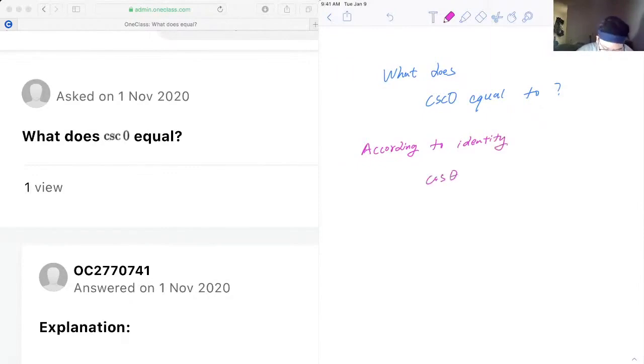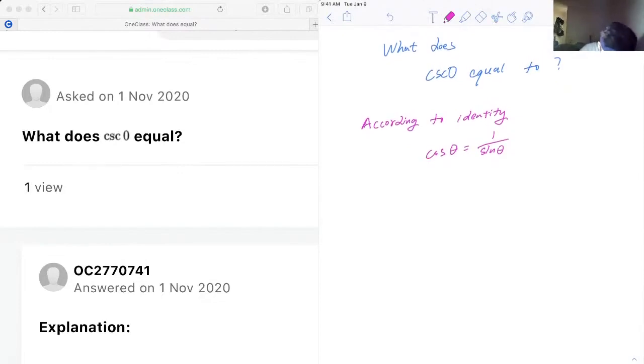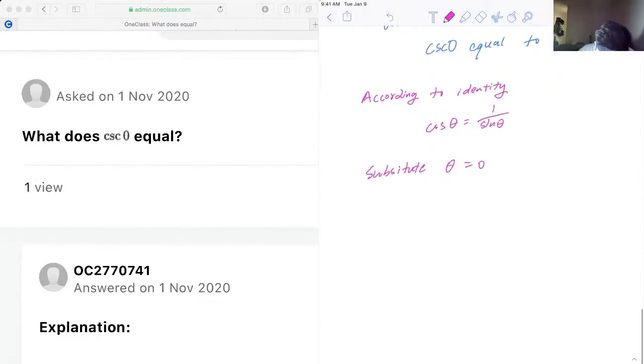Cosecant theta is equal to one over sine theta. In other words, if we substitute theta as zero, we will have...